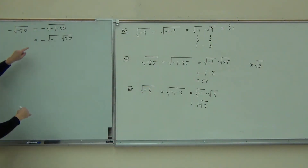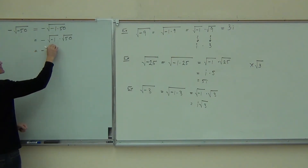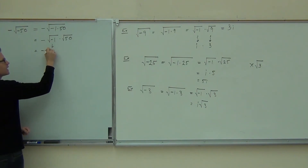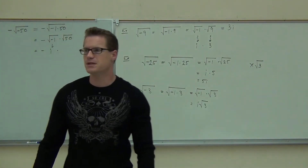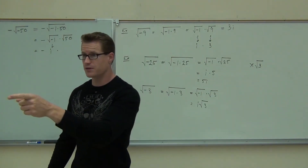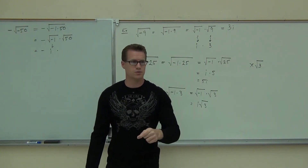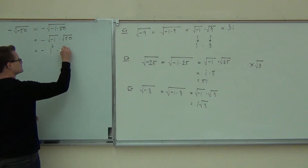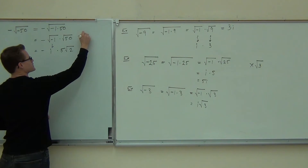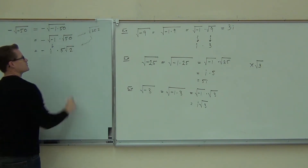How much is that? Well, I know this is a negative. How much is that? So the negative is here. This is an i. And the square root of 50 — can you split up the square root of 50? So we're going to get 5 root 2. Do you see the 5 root 2? Remember, this is square root of 25 times 2 — that's where we're getting the 5 root 2.